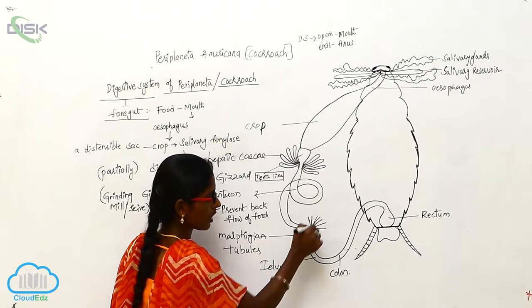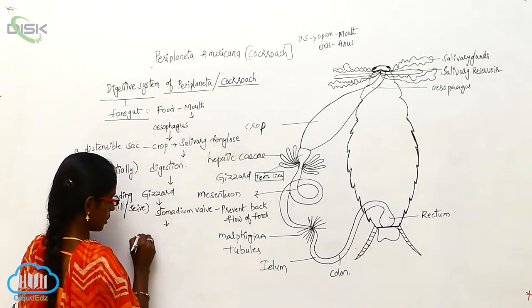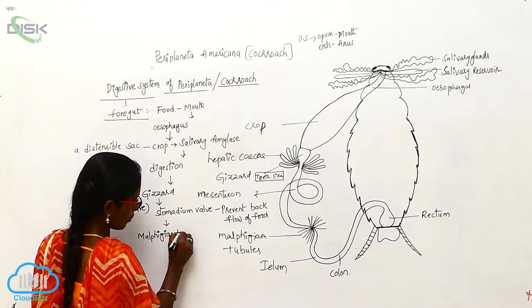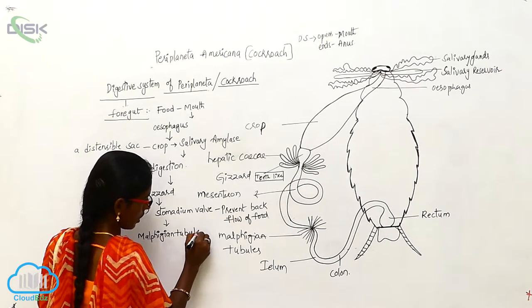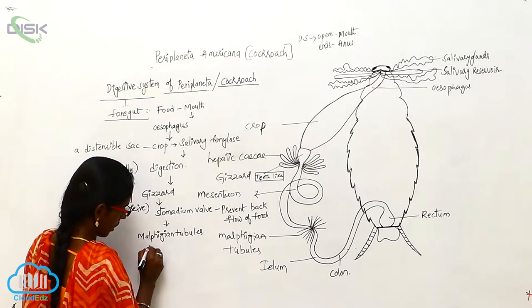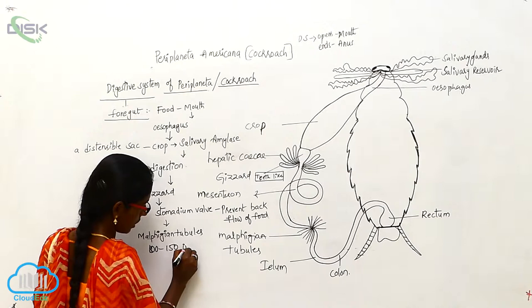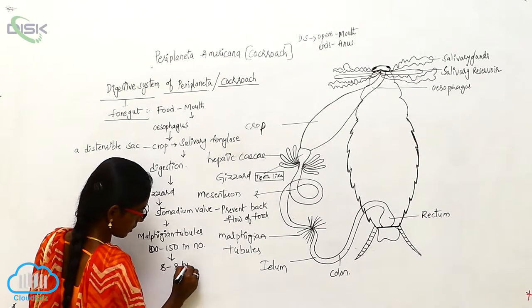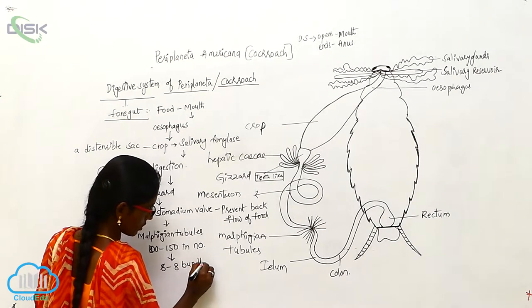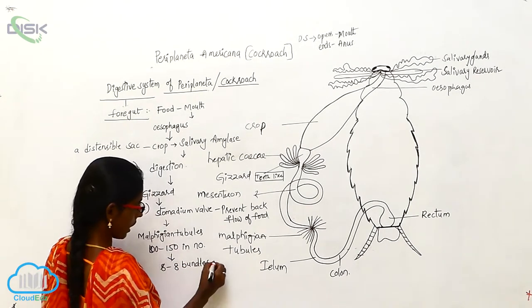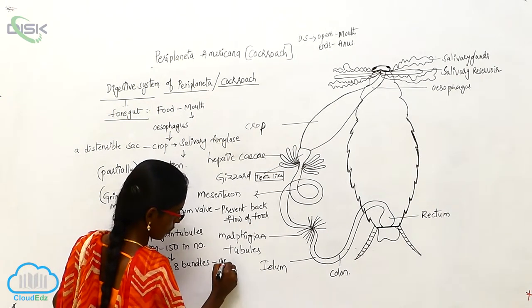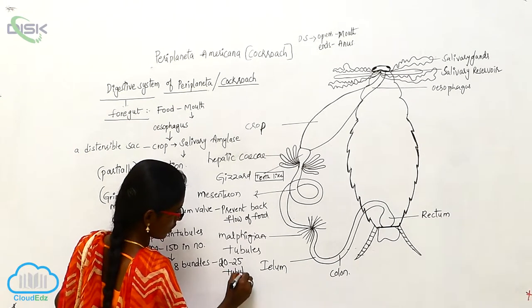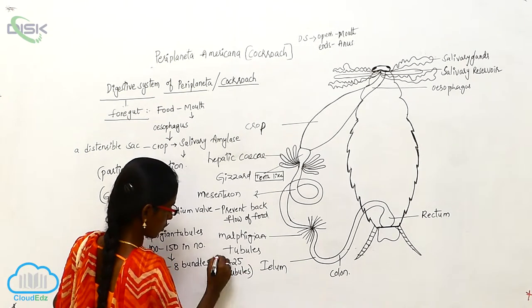The Malpighian tubules are 100 to 150 in number, having 6 to 8 bundles. Each bundle has 20 to 25 tubules.